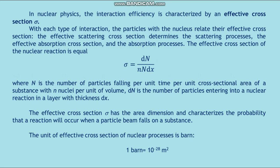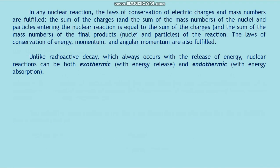The unit of effective cross-section of nuclear processes is the barn: one barn equals 10⁻²⁸ m². In any nuclear reaction, the laws of conservation of electric charges and mass numbers are fulfilled. The sum of the charges and the sum of the mass numbers of the nuclei and particles entering the reaction equals those of the final products. The laws of conservation of energy, momentum, and angular momentum are also fulfilled. Unlike radioactive decay, which always releases energy, nuclear reactions can be both exothermic (with energy release) and endothermic (with energy absorption).